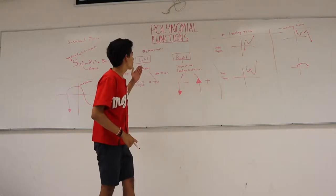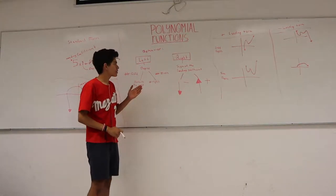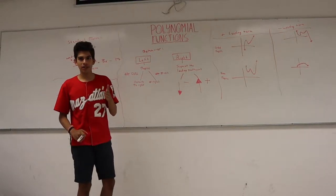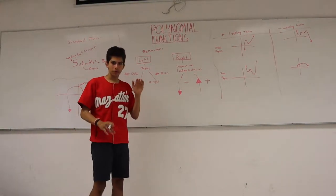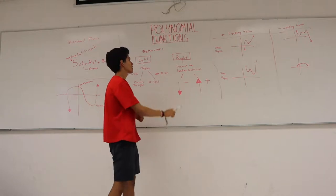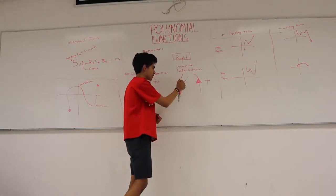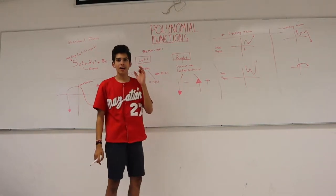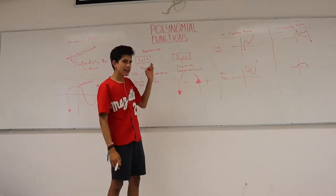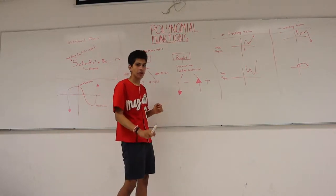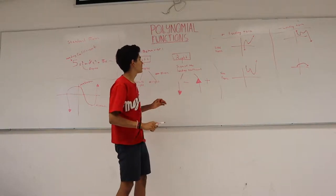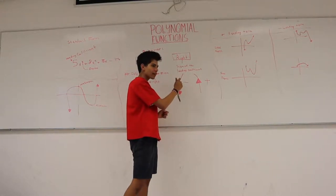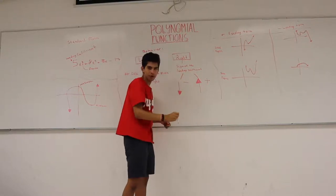To understand polynomial function behavior, we first need to understand how the right and left arm of these functions will move. If the sign of the leading coefficient is positive, the right arm of the function will go up. And if the sign of the leading coefficient is negative, the right arm will go down.